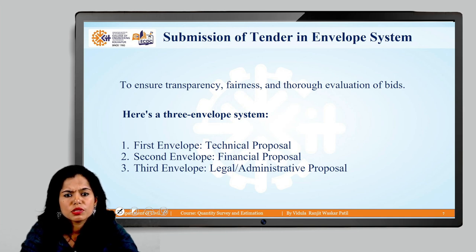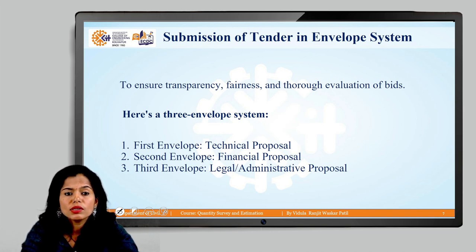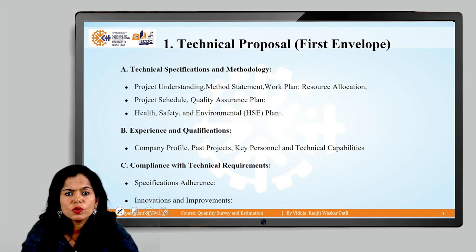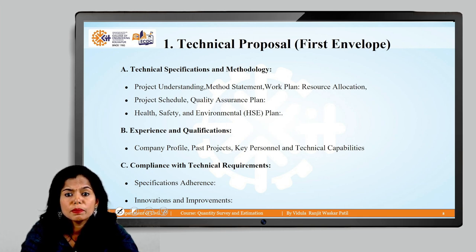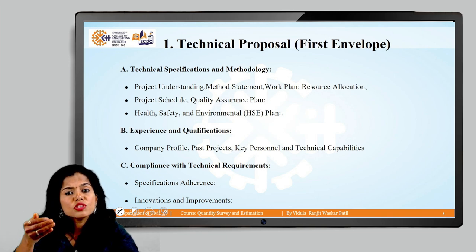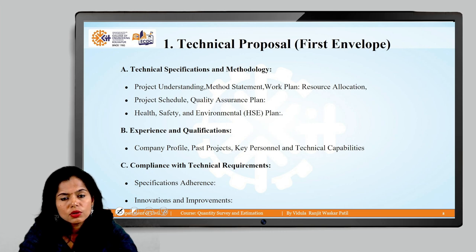Submission of tender is done in a three-envelope system. The first envelope contains the technical proposal — project schedule, quality assurance plan, health and safety plan, environment plan, company profile, past projects, key personnel, technical capabilities, specifications, and any innovative design. Only technical information of the contractor is included here.